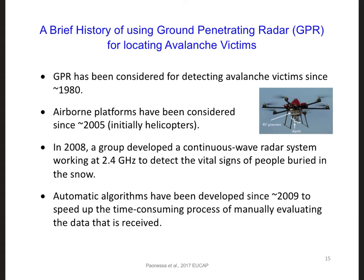Here is a brief history of using ground-penetrating radar, GPR, for detecting avalanche victims. GPR has been considered for detecting avalanche victims since about 1980. Since 2005, researchers have considered airborne platforms for finding victims — helicopters at first, and drones would be another good candidate. Since 2008, a group developed a continuous wave radar system that worked at 2.4 GHz to detect the vital signs of people buried in snow, for example breathing and a heartbeat. Since 2009, automatic algorithms have been developed to speed up the time-consuming process of manually evaluating the received data. However, despite all these advancements, today there is still no widespread use of GPR for finding avalanche victims. Further work is needed to demonstrate the effectiveness of this technology in a wide variety of scenarios.